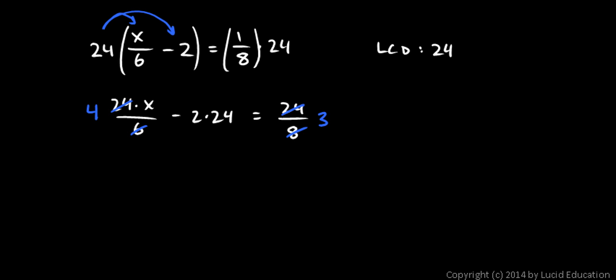On the left side, I have 4 times x minus 2 times 24, which is 48. On the right side I have 3, so it equals 3.